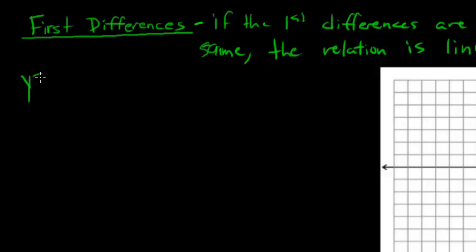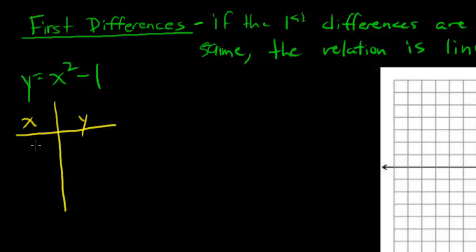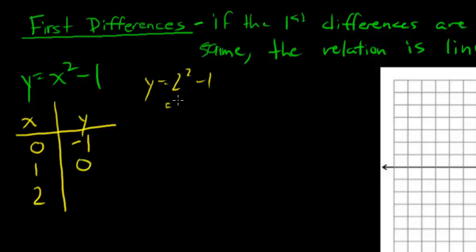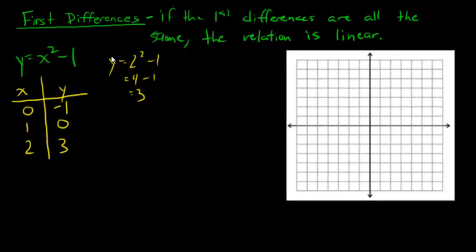Let's try y equals x squared minus 1. Is this linear or not? We're going to try to determine it without the graph, so let's create some random values: 0, 1, and 2. 0 squared minus 1 is negative 1. 1 squared minus 1 is 0. 2 squared minus 1 equals 4 minus 1, which is 3. Let's add one more value — x = 3: 3 squared minus 1 is 8.